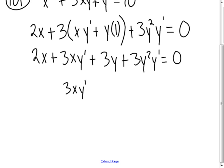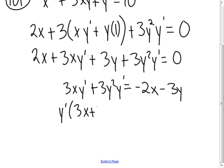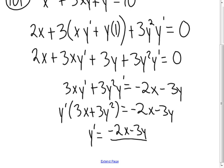So 3xy prime, that stays here, and the 3y squared y prime stays here. On the other side, I'm going to move the 2x over. It becomes negative 2x, and we move the 3y over, and it becomes negative 3y. Now we've got y prime in each of these terms on the left, so we'll just factor it out. y prime times 3x plus 3y squared equals negative 2x minus 3y, and then we'll just divide both sides by this factor multiplying the y prime, and that gives y prime is equal to negative 2x minus 3y over 3x plus 3y squared.